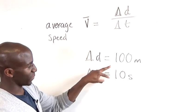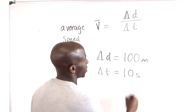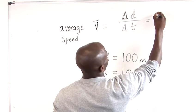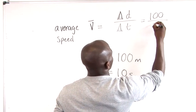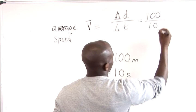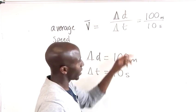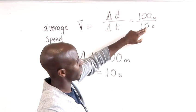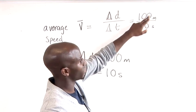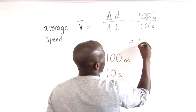Now if we input these values into our equation here, we see that we have a hundred divided by ten. All we have to do is divide the hundred by the ten and cancel the zeros. So we cancel this zero and we cancel that zero and that leaves ten.